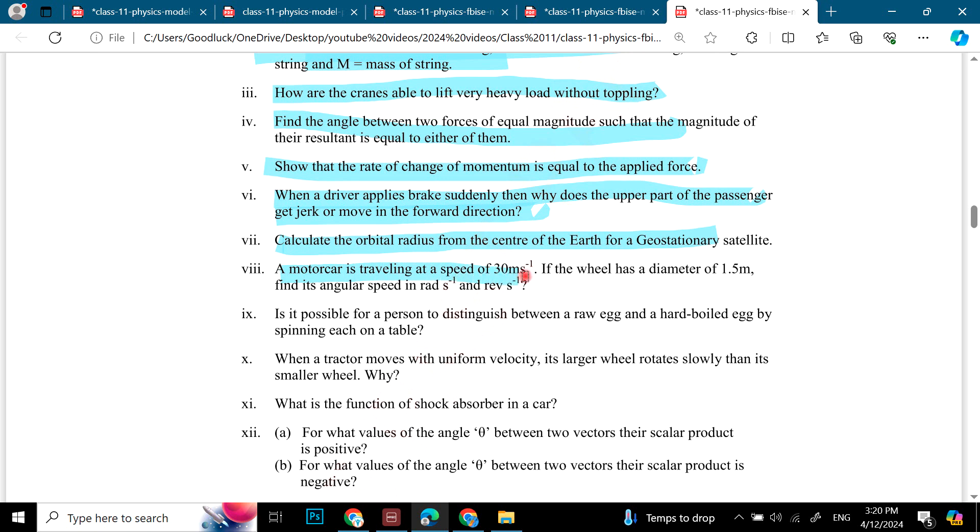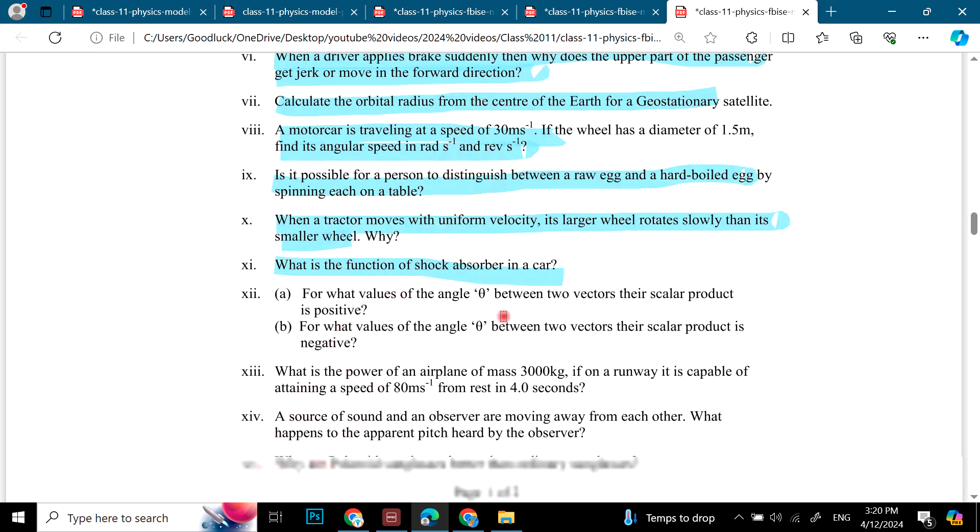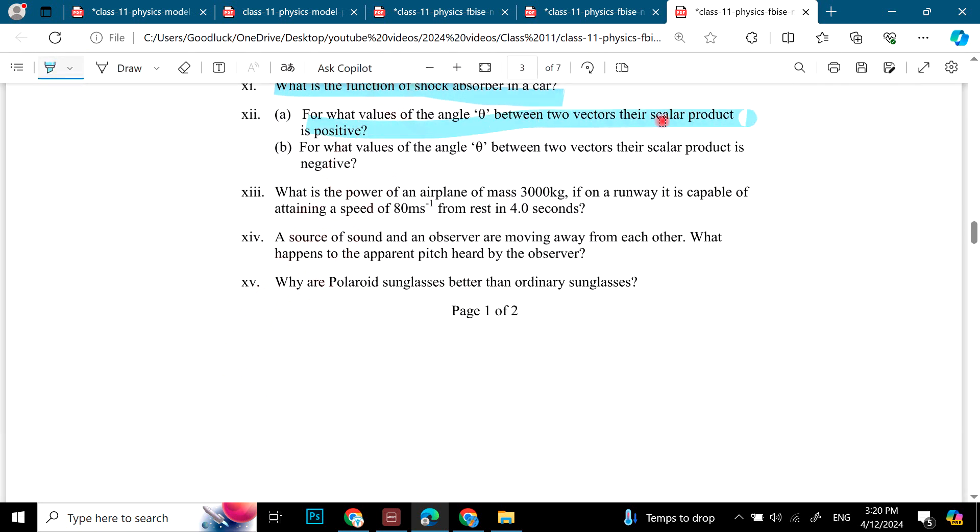A motorcycle is travelling at 30 meter per second. Each chapter 5 is a numerical. Is it possible for a person to distinguish a raw egg or a hard boiled egg? It's an old question but it's a favorite of examiners. When a tractor moves with uniform velocity its larger wheel rotates slowly than its smaller wheel, why? What is the function of a shock absorber in a car? Angle related question, a scalar product that it will be negative and positive. What is the power of an airplane? A source of sound and an observer are moving away from each other. What happened to the apparent pitch? Why are polarized glasses better than ordinary sunglasses?